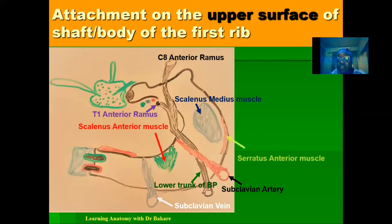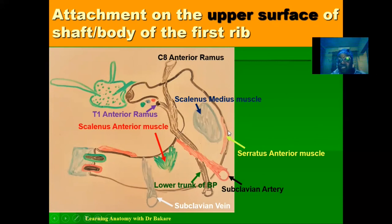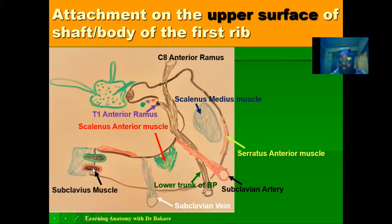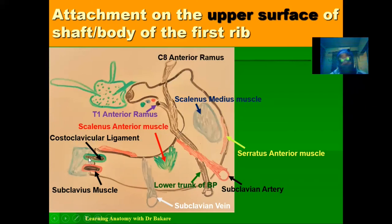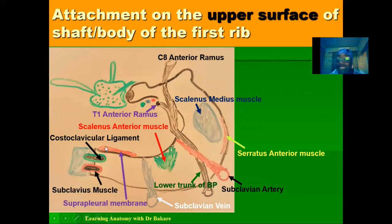We also have the serratus anterior muscle — specifically the digitation of this muscle — seen at the outer border of the upper surface at the extreme region. Coming more anteriorly, we have the costal cartilage and the sternal end of the first rib. Around this junction, we have the subclavius muscle, seen below the clavicle which lies above the first rib. Posteriorly, we have the costoclavicular ligament, connecting the rib to the clavicle above it. Along the medial border of the first rib, highlighted in red, we have the suprapleural membrane.